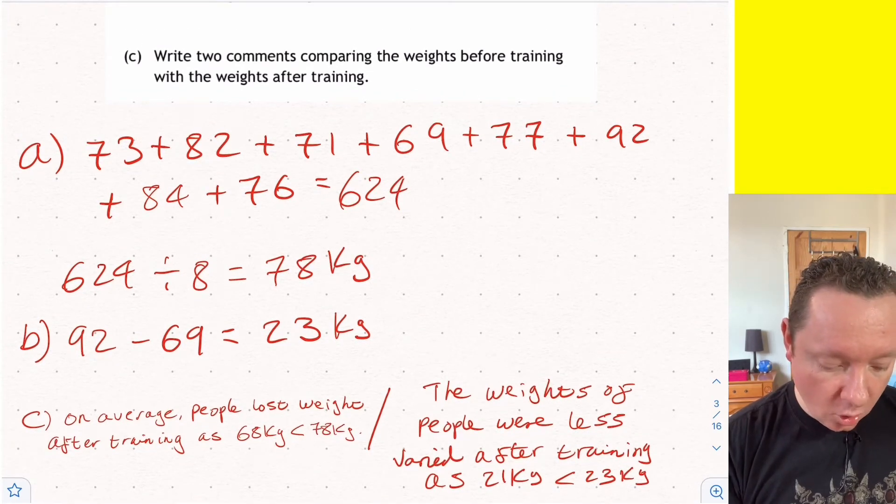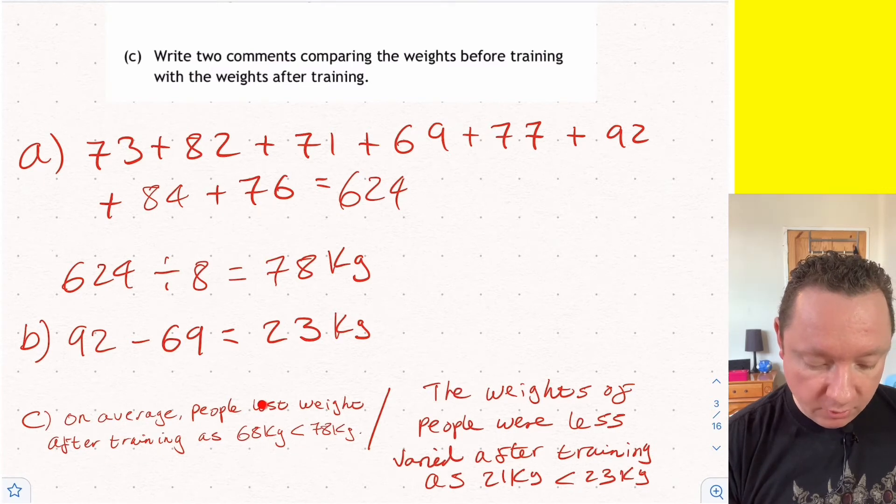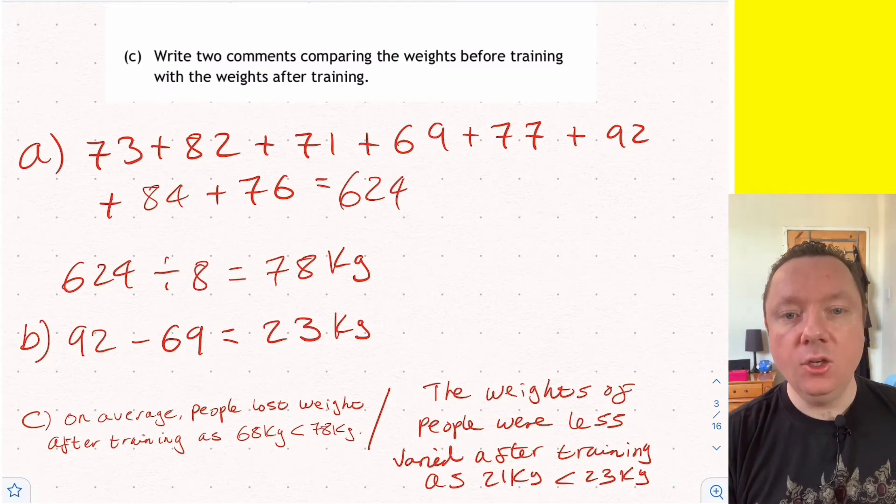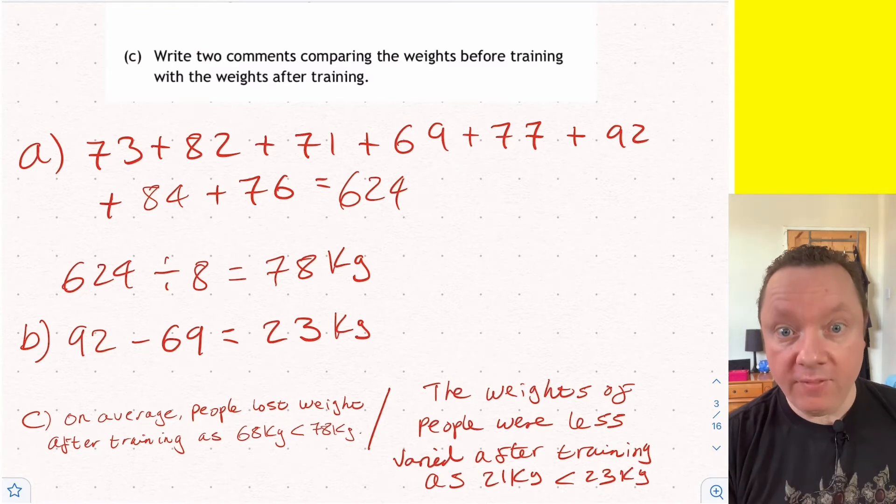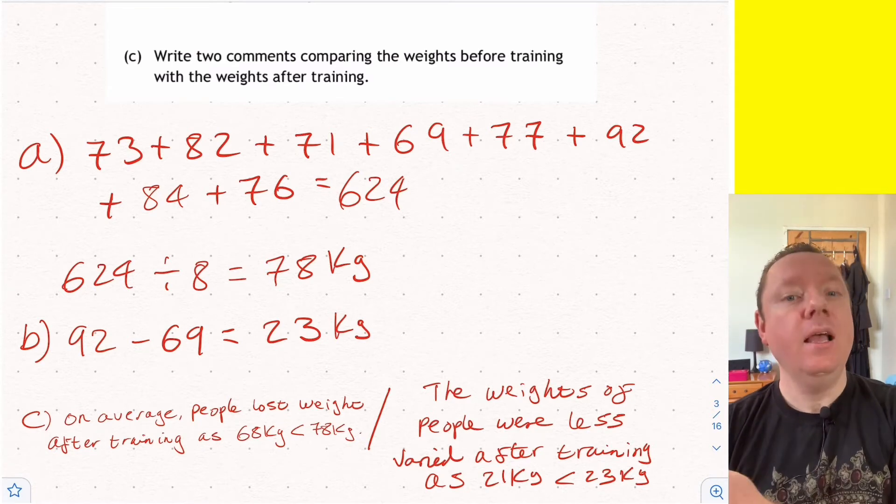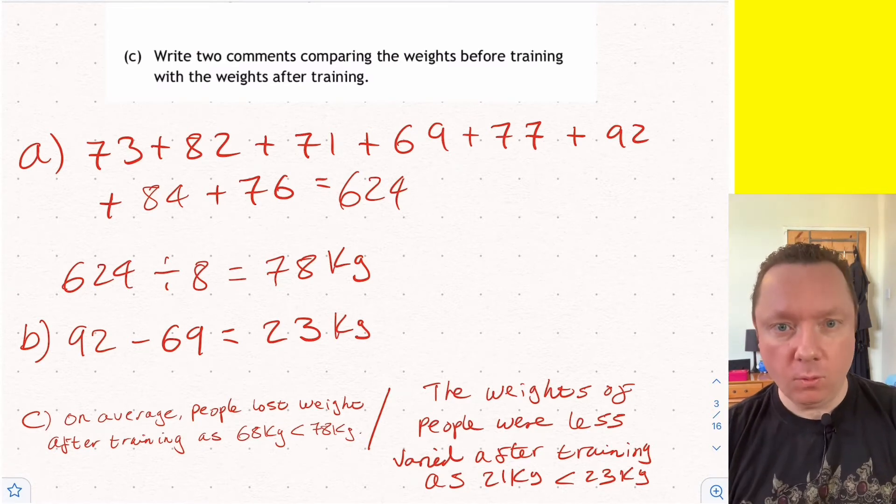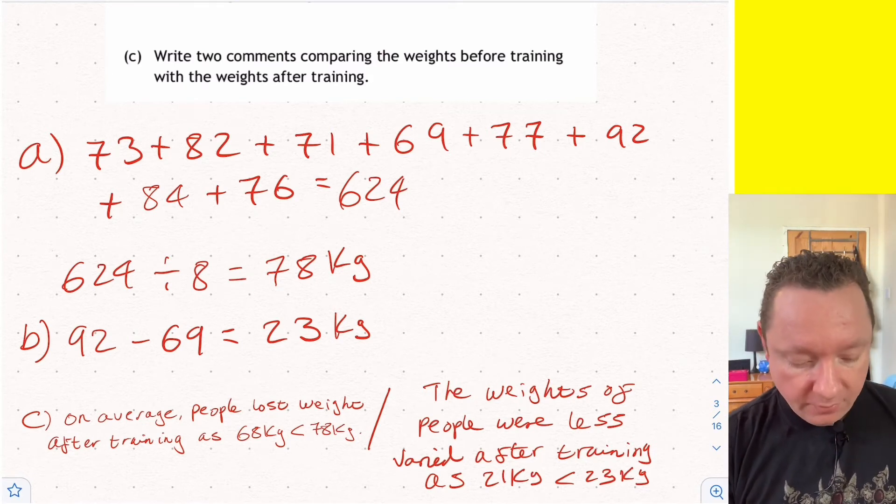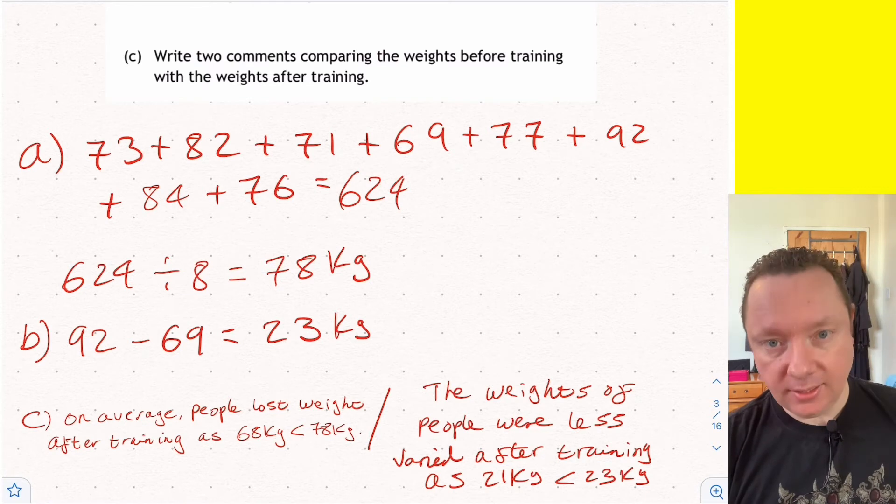Let me show you those comments. So the first one says, on average, people lost weight after training as 68 kilograms is less than 78 kilograms. When you're comparing mean, you have to always use the word on average, and then say what's happened, and then say why, what's happened to the numbers.